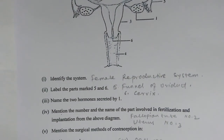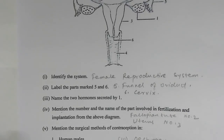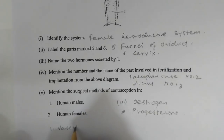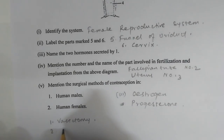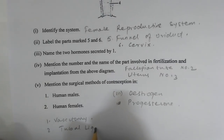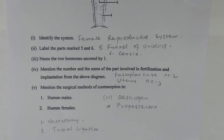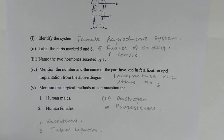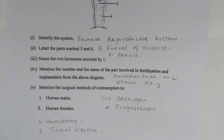Number five — mention the surgical method of contraception. In human males it is vasectomy, and in human females it is tubal ligation. With the end of Section 2, we end this video here. More videos are coming soon — till then, stay tuned.